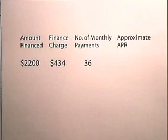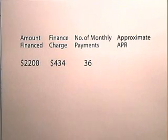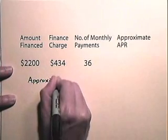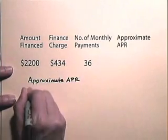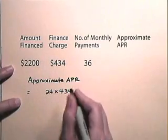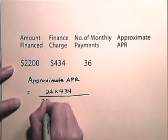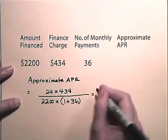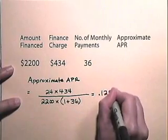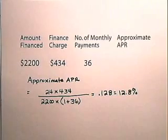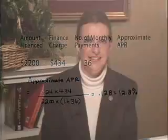If the amount financed is $2,200, the finance charge is $434, and the number of monthly payments is 36, let's approximate the APR. So the approximate annual percentage rate will be 24 times 434 divided by 2,200 times the quantity 1 plus 36. This value is 0.1228, or approximately 12.8%. So the approximate APR on this particular purchase is 12.8%.